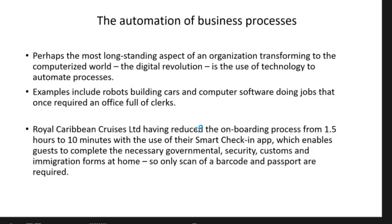Automation of business processes is perhaps the most long-standing aspect of organizations transforming to a computerized world. The digital revolution uses technology to automate processes — examples include robots building cars and computer software doing jobs that once required an office full of workers. One example is Royal Caribbean Cruise Limited, who reduced their onboarding process from 1.5 hours to 10 minutes using their smart check-in app, which enables guests to complete necessary governmental, security, customs, and immigration forms at home.